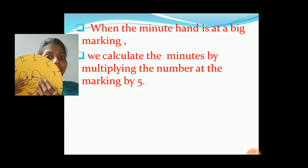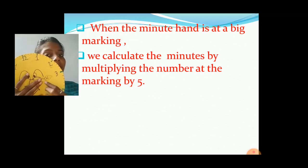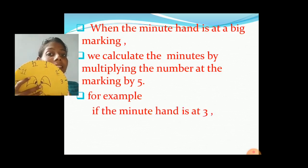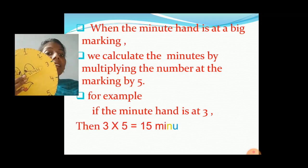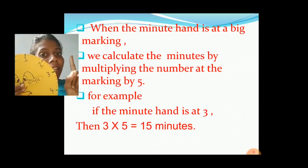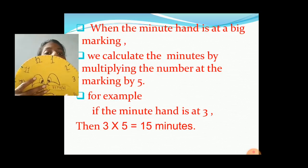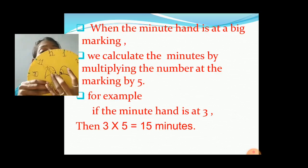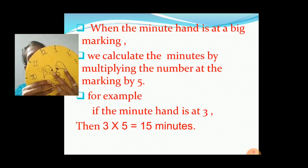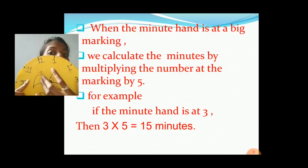If the minute hand is at number 3, big marking number 3, then we will multiply this number 3 by 5. So 3 fives or 5 threes are 15. So it is 15 minutes. Understood? Very easy. If the minute hand is at number 11, then we will multiply 5 with number 11. So 11 fives are 55. So it is 55 minutes. Right? So it is easy to count or easy to read the minutes.